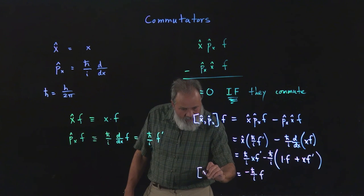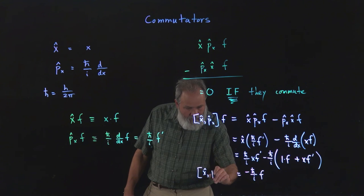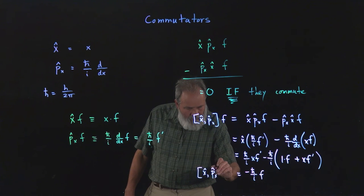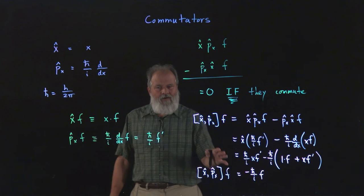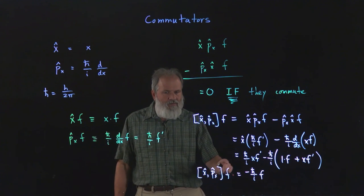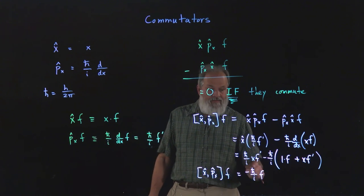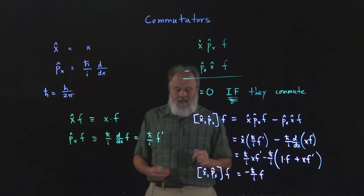So let's go ahead and bring this commutator all the way down. So this commutator acting on the function f, the end result is a constant times the function f. Now that's interesting.